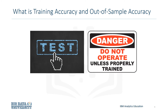Out-of-sample accuracy is the percentage of correct predictions that the model makes on data that the model has not been trained on. Doing train and test on the same dataset will most likely have a low out-of-sample accuracy due to the likelihood of being overfit. It's important that our models have a high out-of-sample accuracy, because the purpose of any model is to make correct predictions on unknown data.